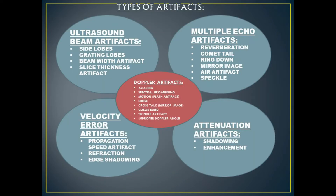There are five categories of ultrasound artifacts that can occur when one of the seven assumptions about sound waves that the ultrasound machine makes fails to occur. Category one are ultrasound beam artifacts. Category two are multiple echo artifacts. Category three are velocity error artifacts. Category four are attenuation artifacts. And the last category are Doppler artifacts.